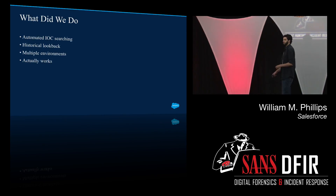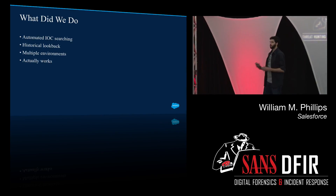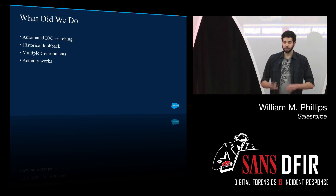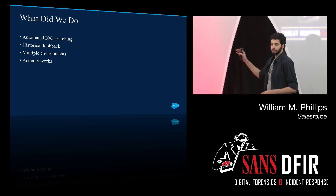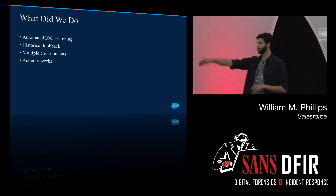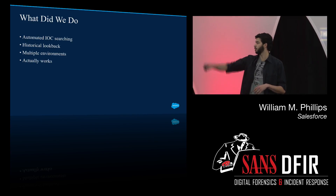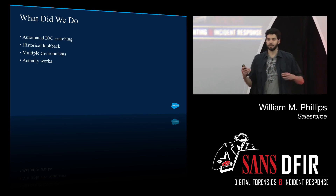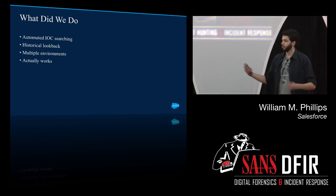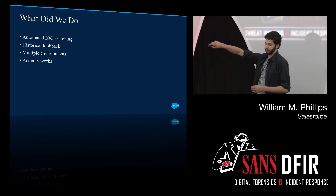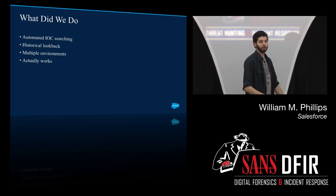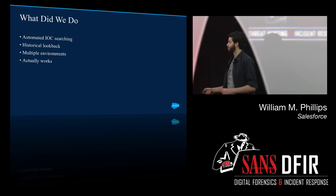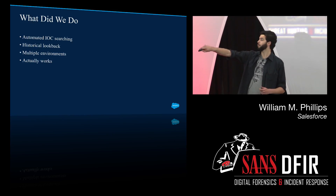It also does this nifty thing: historical look back. When we get a new report from a trusted third party saying these indicators are bad — APT1, APT2 — we need to go do the searches. All of this is automated with Overlord. We put them into the database and it does the historical look back. Salesforce is a really big company — we buy a lot of companies and get a lot of separate environments. Overlord works in all those separate environments. It's actually caught our red team using it, which is amazing. They made a couple mistakes, and we caught them — we wouldn't have seen them otherwise.